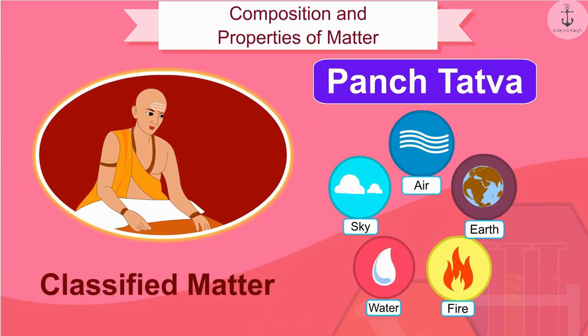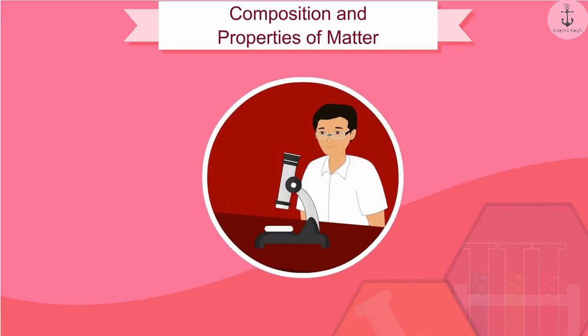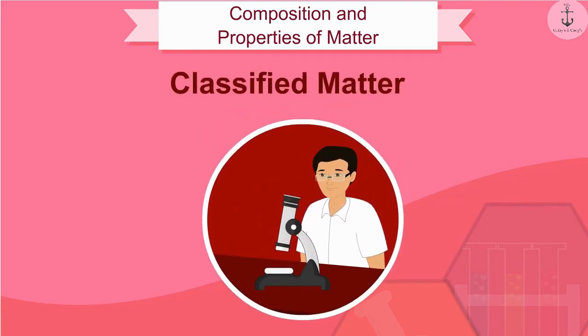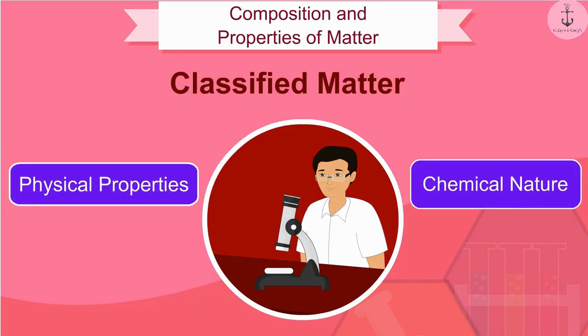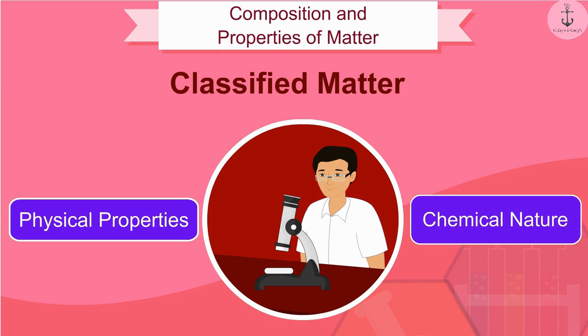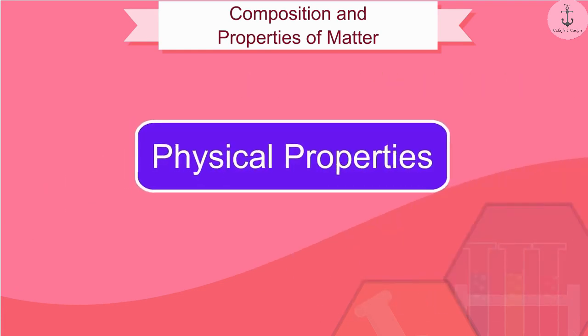Philosophers of the time have classified matter in a similar way. Modern scientists have evolved two types of classification of matter based on their physical properties and chemical nature. Let us earn knowledge about matter based on physical properties in this video.